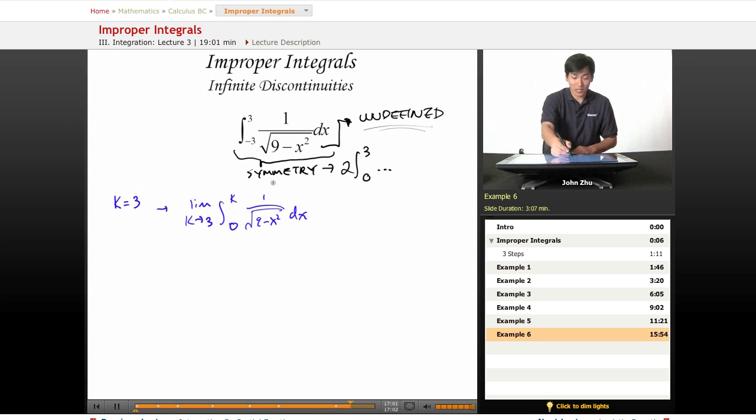We can see that this is another trig integral. If we remember from our table, this equals limit as k approaches 3, times sine inverse of x over the square root of this term, which is 3, taken from 0 to k.